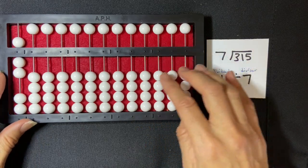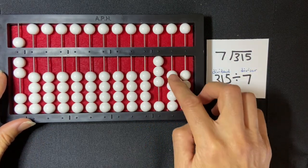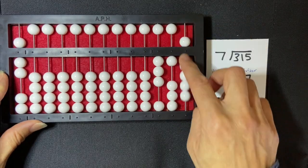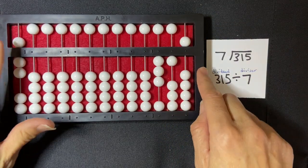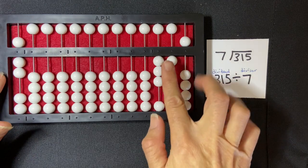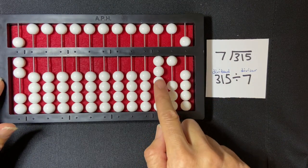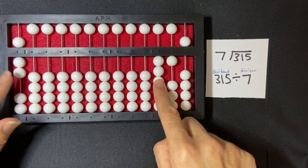One, two, three, four, five. Three hundred and fifteen divided by seven. So the first thing I need to do is compare the first digit in my dividend with my divisor.